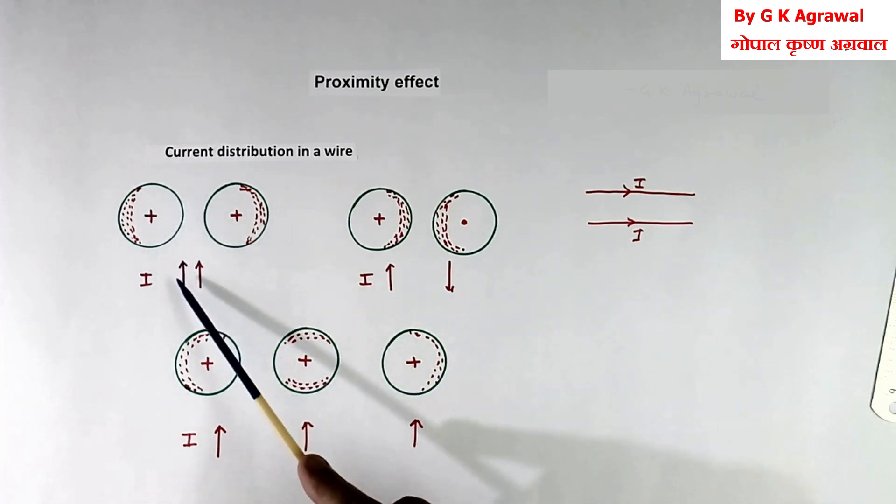This similar cross means same direction. Here I have shown one cross, one dot, to opposite direction.